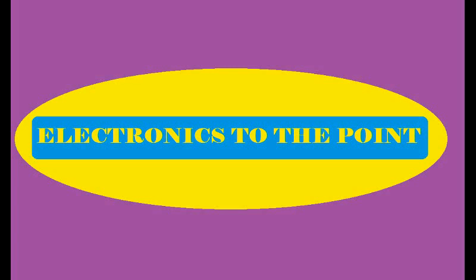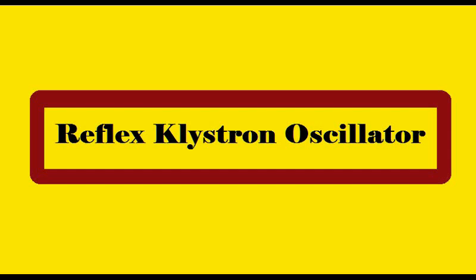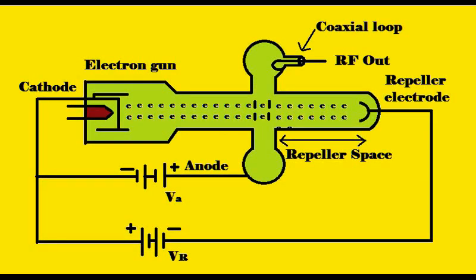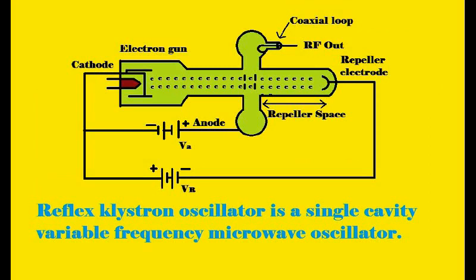Welcome to Electronics to the Point. In this video we will see how microwave oscillations are generated in a reflex klystron oscillator. An oscillator is a device which converts DC input to AC output, whether currents or voltages. For an amplifier, how do we make an oscillator? By connecting feedback — an amplifier can be converted into an oscillator.